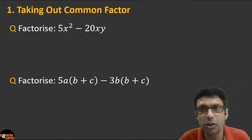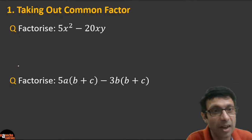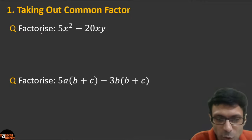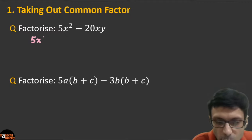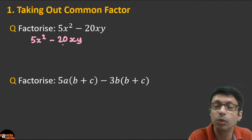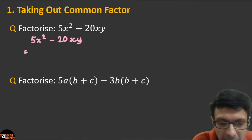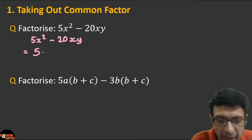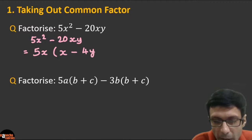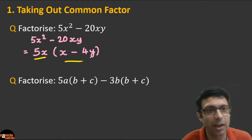Technique 1: Taking out the common factor. Given 5x² − 20xy — what is the common factor? You can see 5 is common to both terms, and x is also common. So we take out 5x as the common factor, and we're left with (x − 4y). So 5x² − 20xy = 5x(x − 4y). That is our factorization.